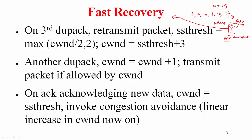The idea is: the fact that you are receiving duplicate acknowledgements means the receiver is removing a packet from the pipe, in which case it makes sense to put a packet into the pipe in place of the previous one. That way the pipe doesn't go empty. Once you receive an acknowledgement for the retransmission, from that point on you do congestion avoidance — in this example, operating at the safe point of 16.